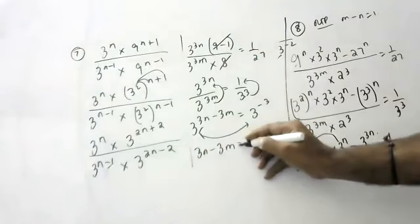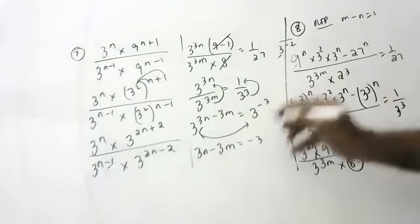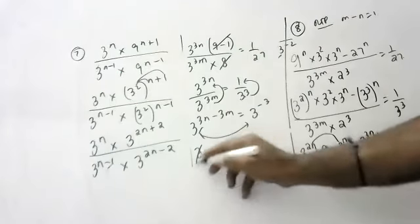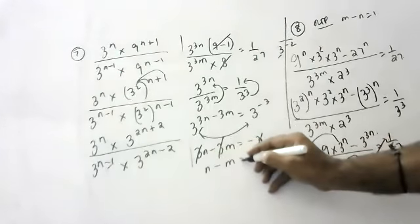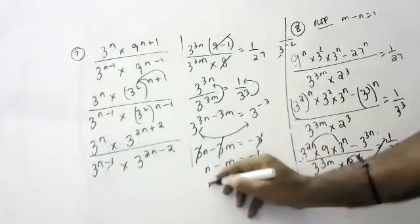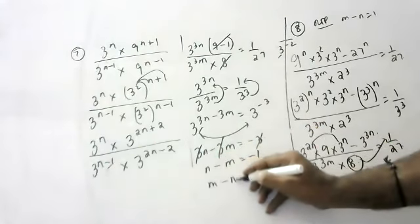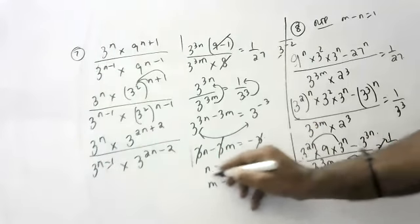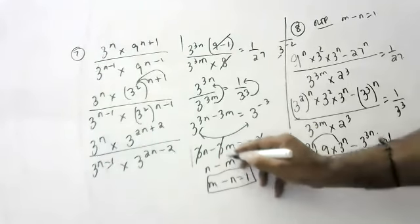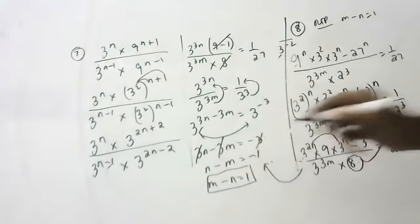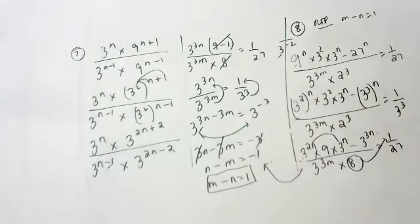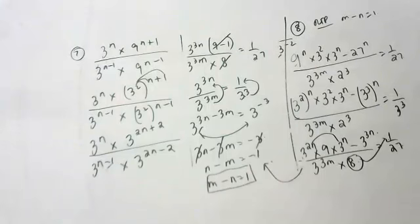So 3 to the power 3n minus 3 to the power 3m equals minus 3. The 3s cancel, giving n minus m equals minus 1. Therefore m minus n equals 1. Yes, because here there is minus 1 — if you reverse it, it becomes plus. Hence, m minus n equals 1. Please each time practice 2 times and submit your own work by tomorrow.